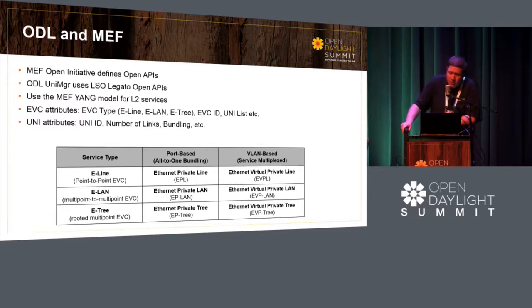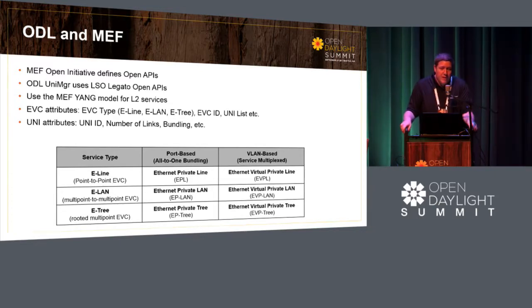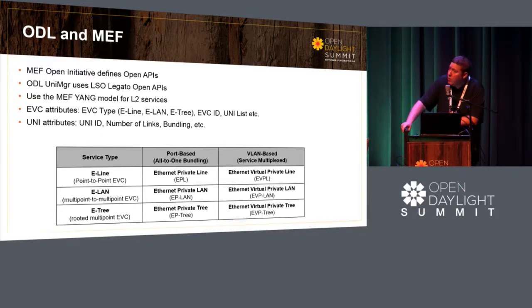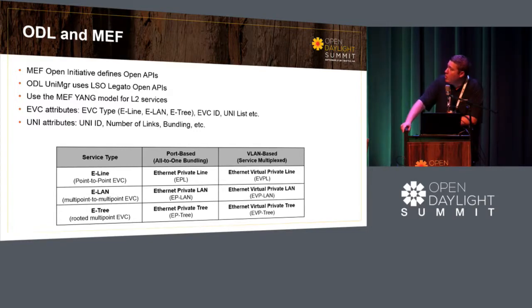In each service you have the MEF attributes — we took them from the same YANG which MEF created. You have the EVC type showing the three types. For each type you can decide if it's VLAN-based or port-based, and you have the bundling option: all-in-one, the whole port, or per-VLAN a different service. The number of links allowed per UNI. Basically all the MEF API we can export and use the network capabilities to create networking to support it.